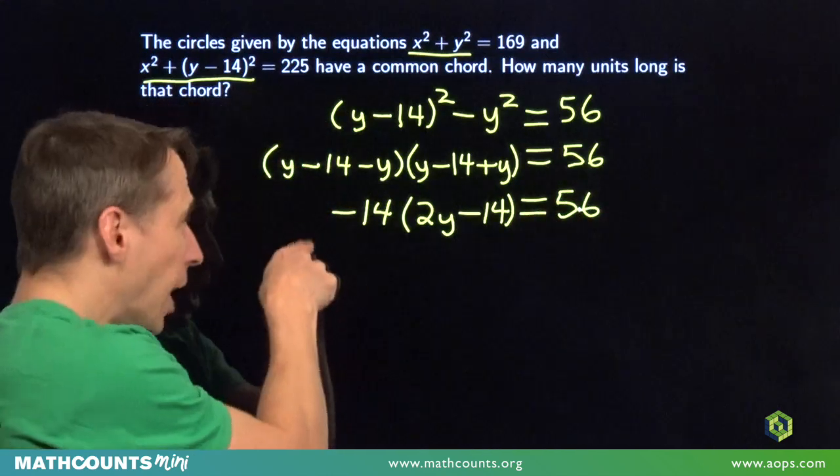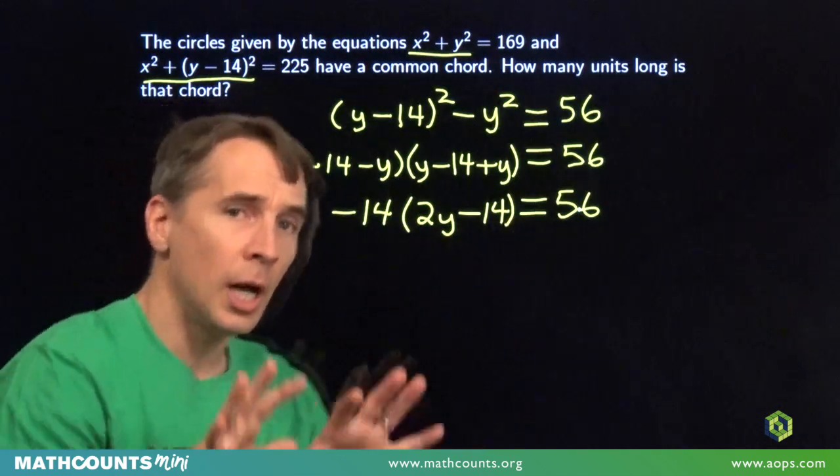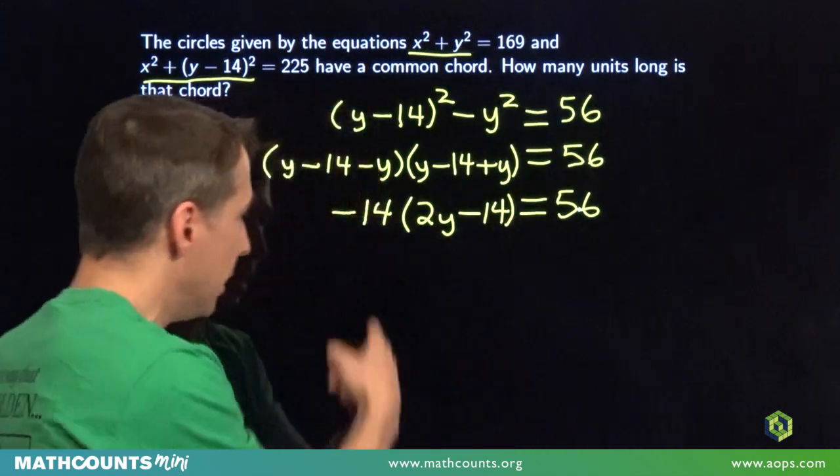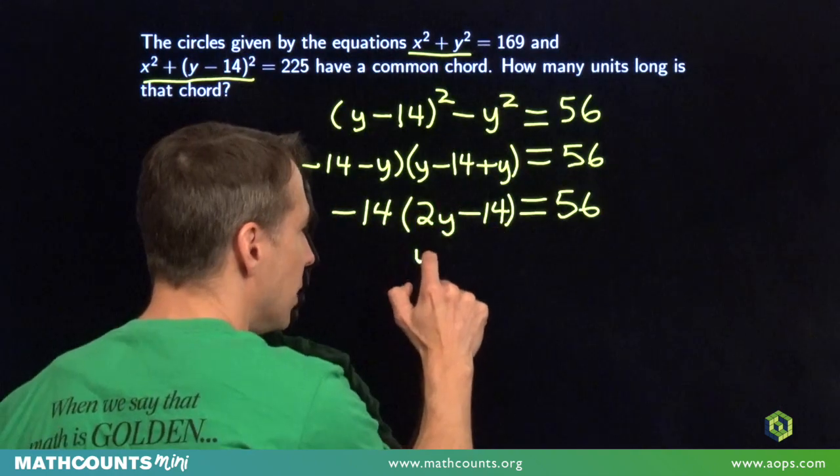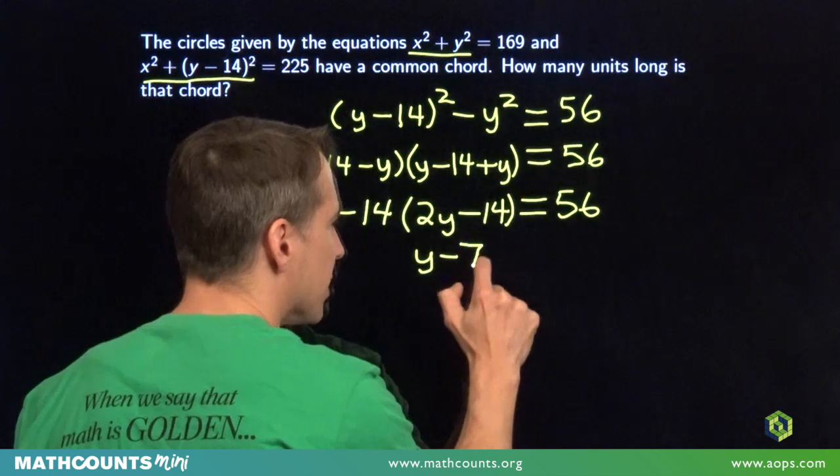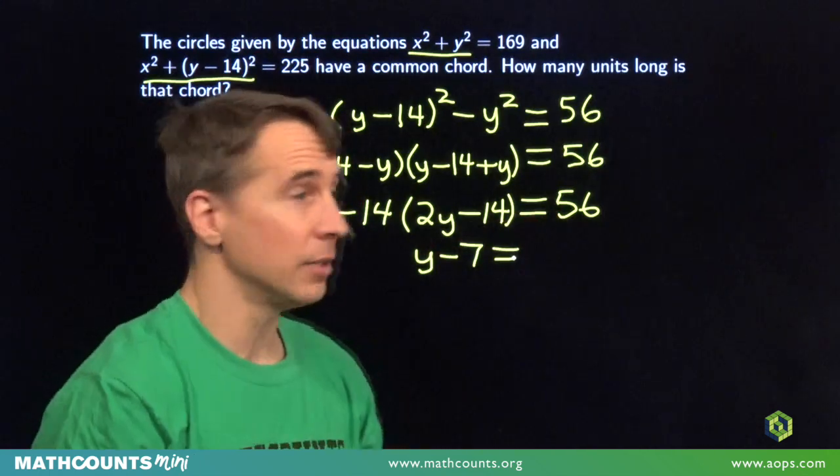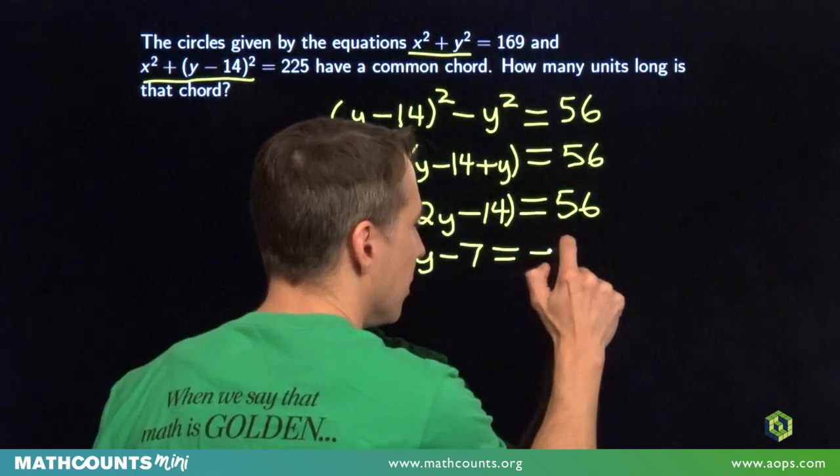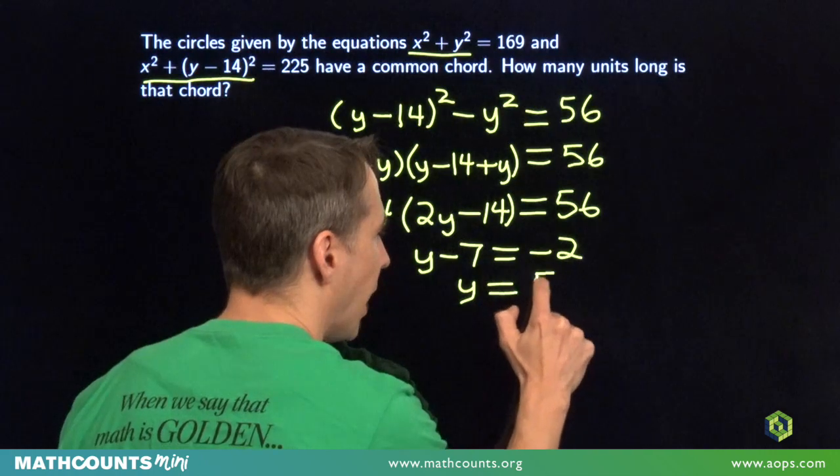Now we could divide both sides by negative 14, but I see there's a factor of 2 in here. I'm going to divide both sides by negative 28. That'll take care of the negative 14 out here, and the factor of 2 in there. Leave us with y minus 7 on the left. On the right, 56 divided by negative 28 gives us negative 2. Add 7 to both sides. Now we have y equals 5.